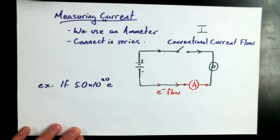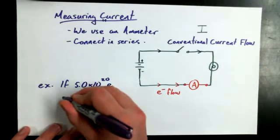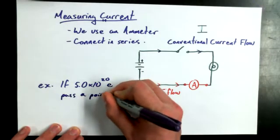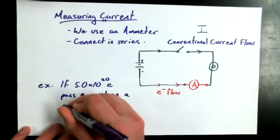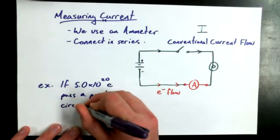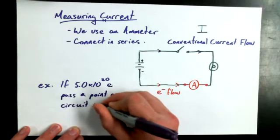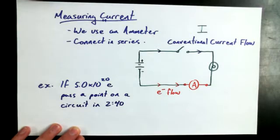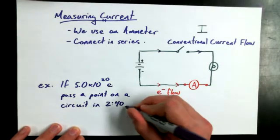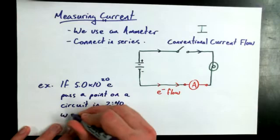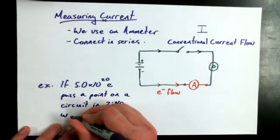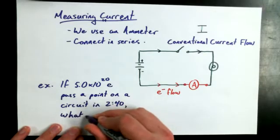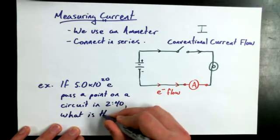If 5.0 times 10 to the power of 20 elementary charges pass a point in a circuit in 2 minutes and 40 seconds. Now, this is shorthand for 2 minutes and 40 seconds. 2:40, not 2.40, not 2 o'clock and 40 minutes, 2 minutes and 40 seconds. What is the current in the circuit?